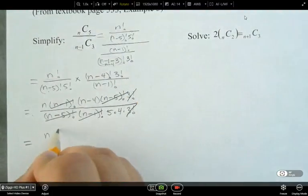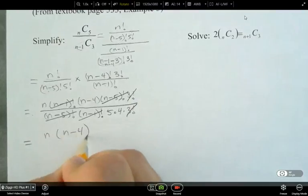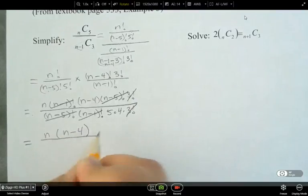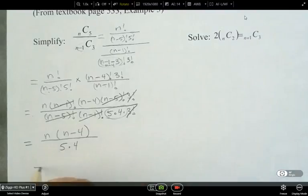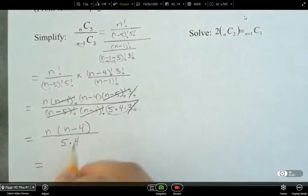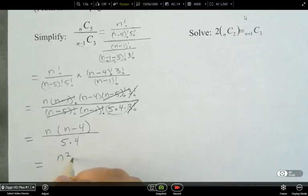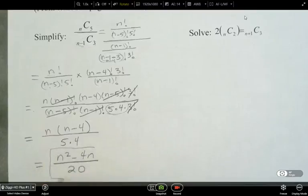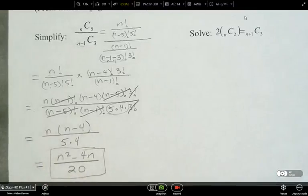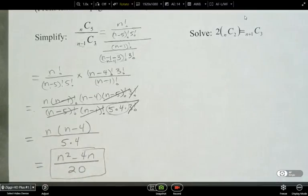And then we've got n times n minus 4 over 5 times 4, which if we simplify this further, we have n squared minus 4n over 20. And this is where you would end.